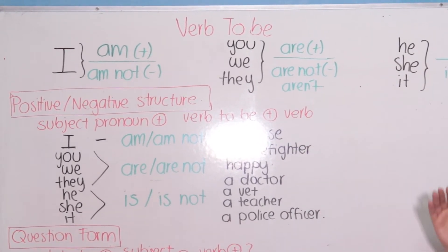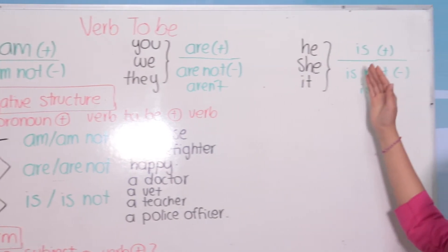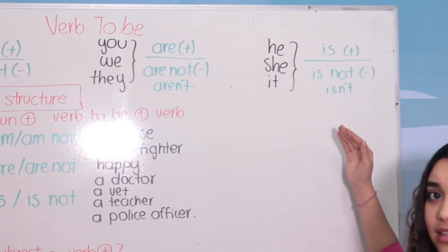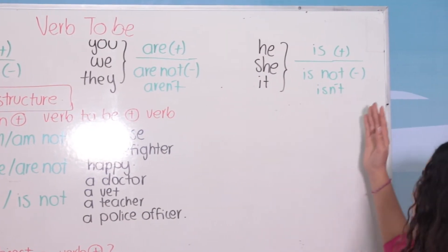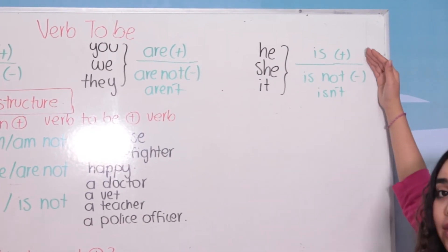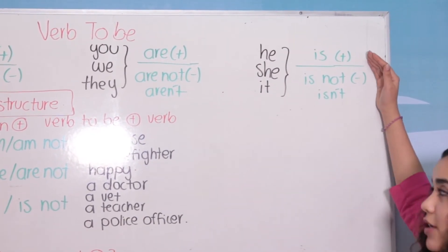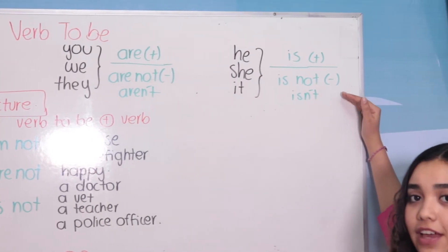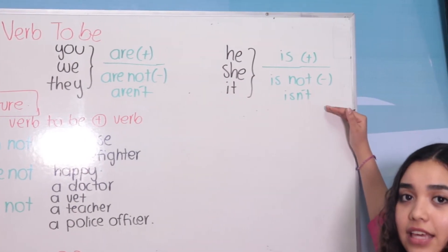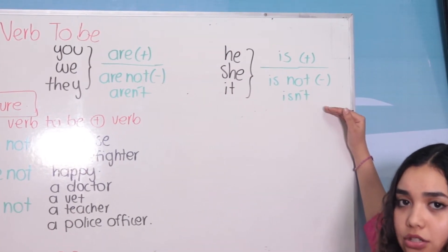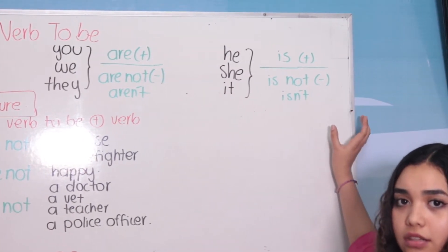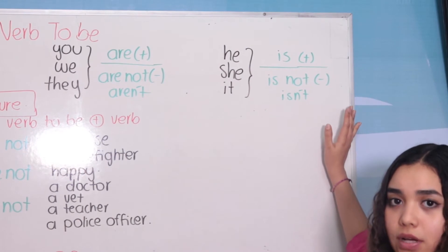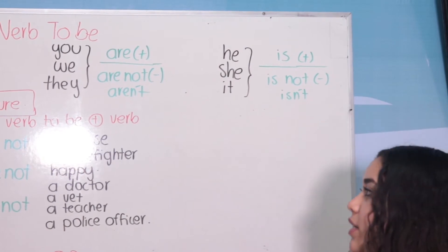And then we have he, she, and it — the third person. We have 'is' in positive, 'is not' in negative, and 'isn't' is the short form or the contraction of 'is not' — whatever you want to use.